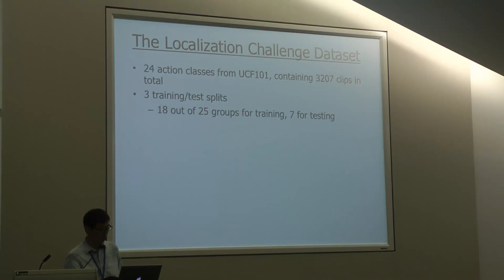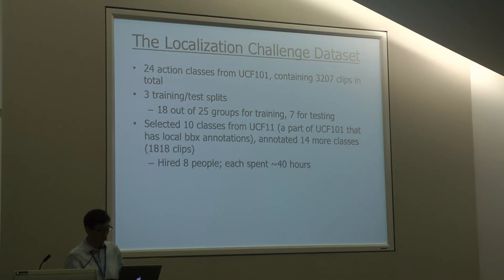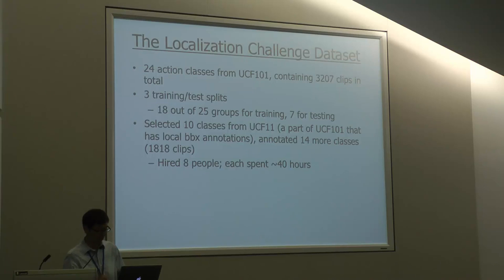There are three training and test splits. For each action in UCF 101 there are 25 groups, so we use 18 of them for training and seven for testing. We use three training and test splits to switch those videos between training and testing. For those 24 action classes, 10 of them were selected from UCF 11, which has been a part of UCF 101, and we added 14 more classes which tend to have around 1,800 clips.